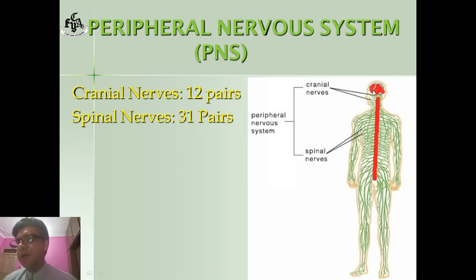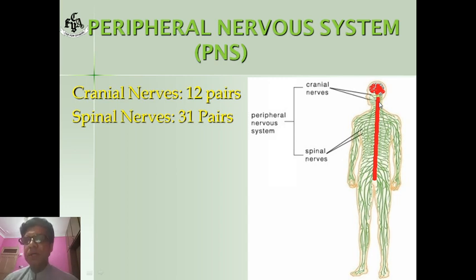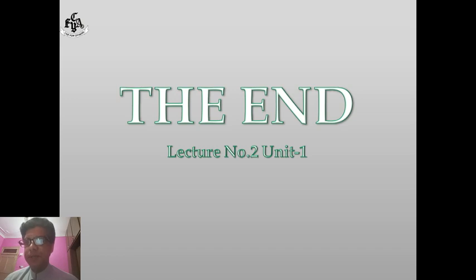To summarize: the Peripheral Nervous System is a network of nerves that connect different body parts with the Central Nervous System. This was the second lecture of Unit Number One. Thank you.